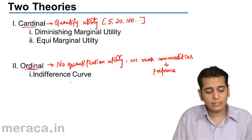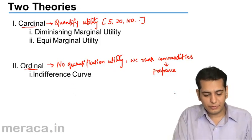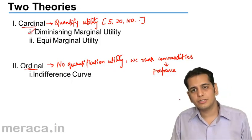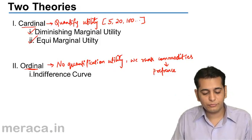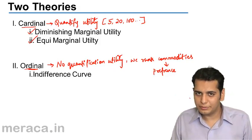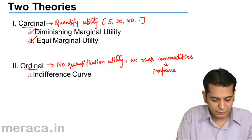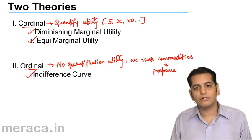Now, under the cardinal principle, we study the law of diminishing marginal utility and the law of equi marginal utility. However, under the ordinal principle, we will be doing the indifference curve analysis.